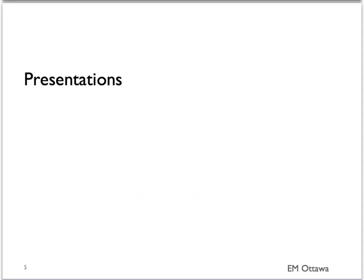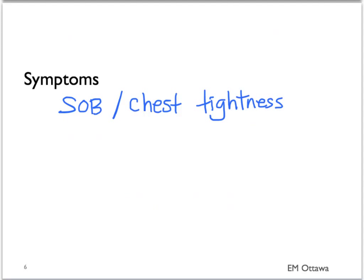How do patients with asthma exacerbation present? Let's first talk about symptoms. Asthma patients usually present with shortness of breath and chest tightness. It is usually worse on exertion. They may describe hearing wheezes and may try to use their puffers more often.